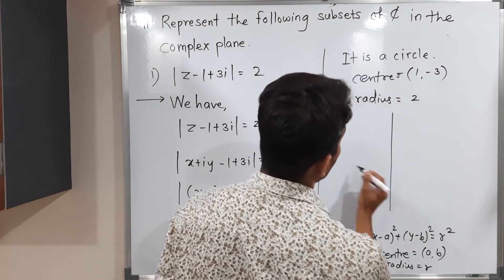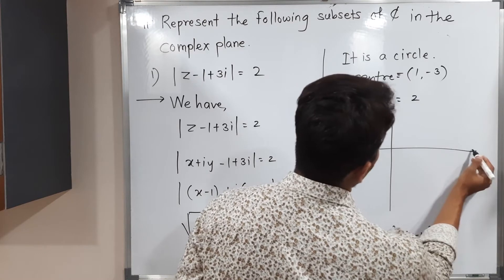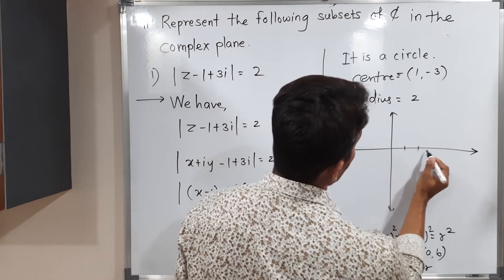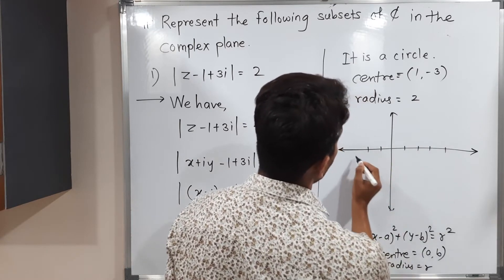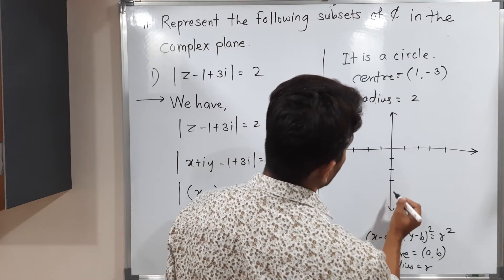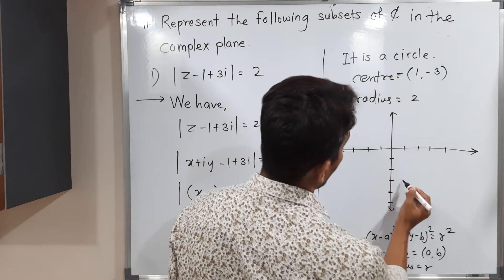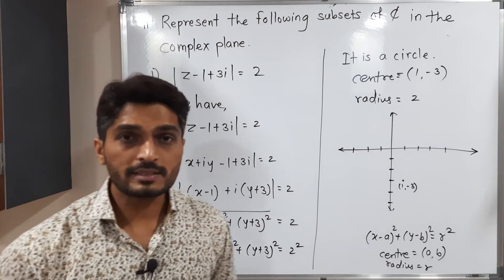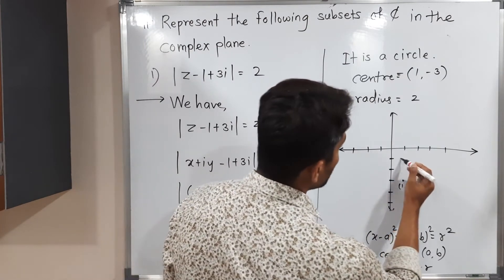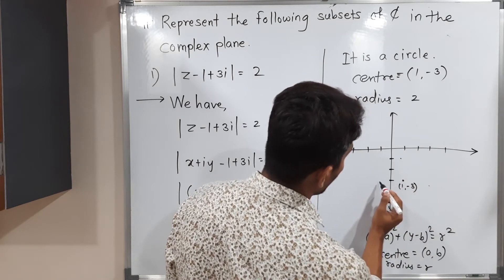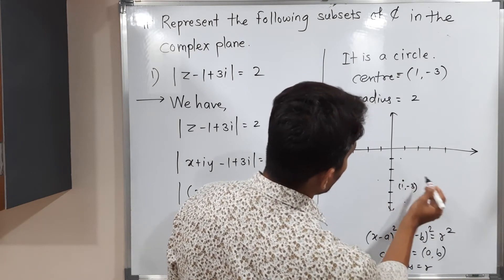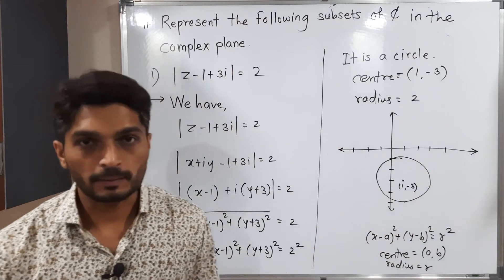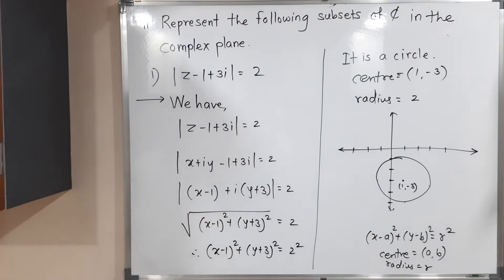Let us draw that circle. Here we have the real axis (x-axis) and the imaginary axis. Marking coordinates: 1, 2, 3, 4 and −1, −2, −3 on the real axis; −1, −2, −3, −4, −5 on the imaginary axis. The center is at (1, −3). With radius 2, we go 2 units in each direction. So the circle looks like this — this is a rough sketch. This is the required circle.